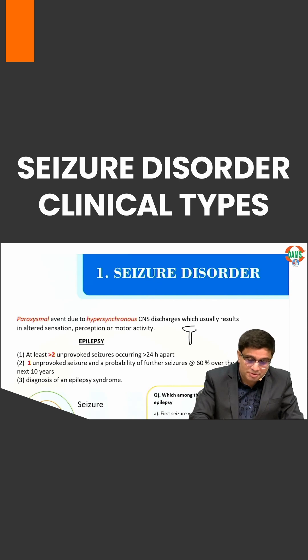If I locate the central nervous system, it is made up of two parts: one above, which is the cortex, and the other one below, which is the spinal cord.